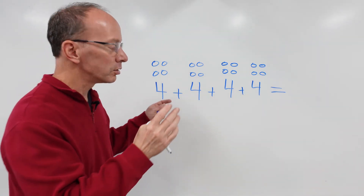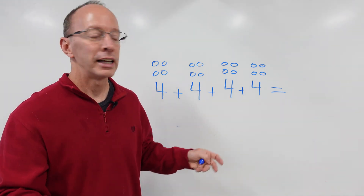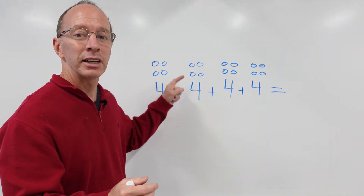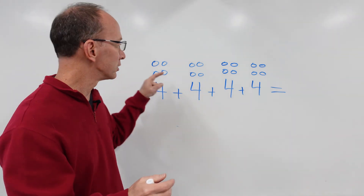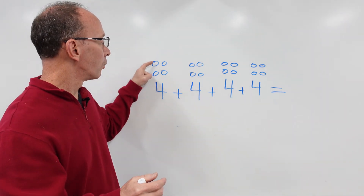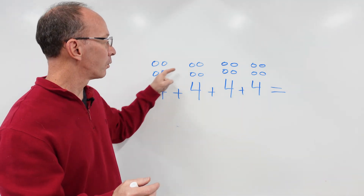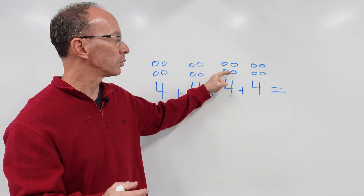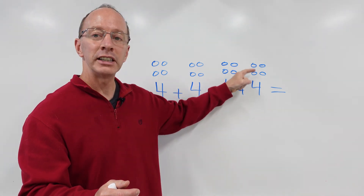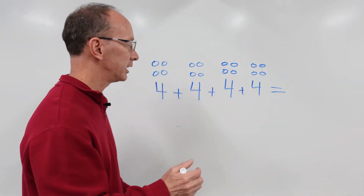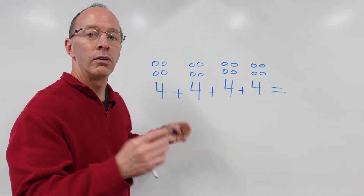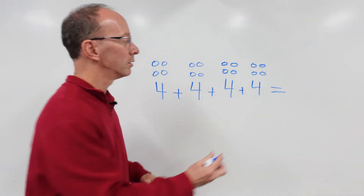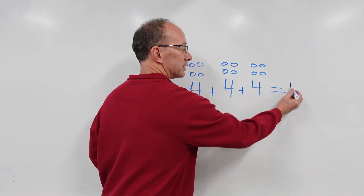If you don't know how to count by fours, just count all the circles: one, two, three, four, five, six, seven, eight, nine, ten, eleven, twelve, thirteen, fourteen, fifteen, sixteen. So four groups of four equal sixteen.